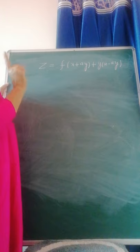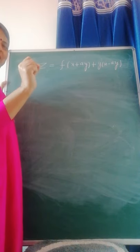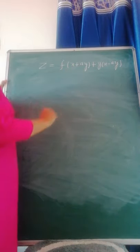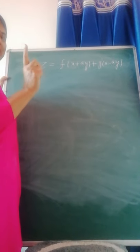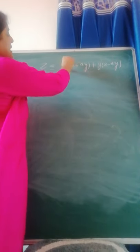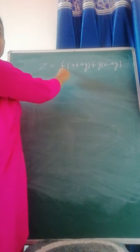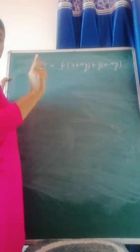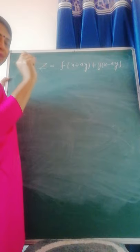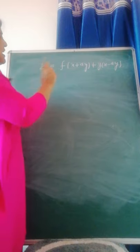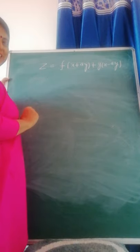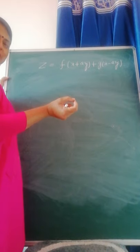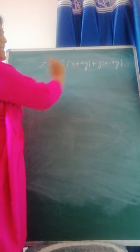Before forming the partial differential equation, look at the given relation. It says: eliminate the arbitrary functions f and g to form the partial differential equation. Now, how many arbitrary functions are there in this relation? Two — f and g. If a relation has two arbitrary functions, then the partial differential equation will be of second order. If there is one arbitrary function, then it will be first order. Here it will be second order.